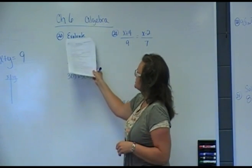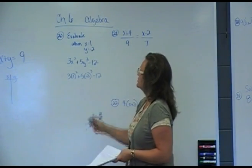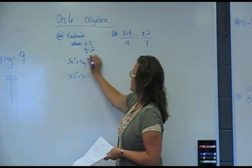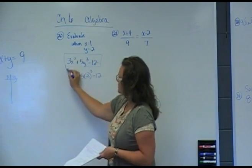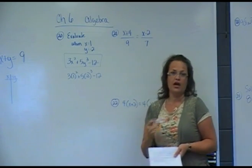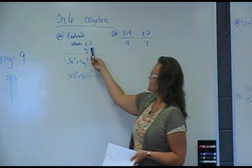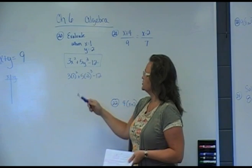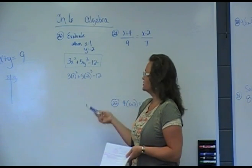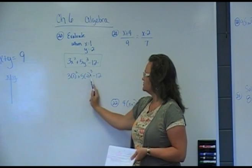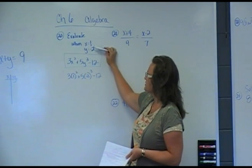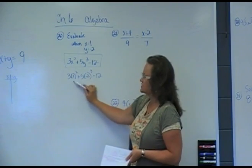Number 20, we'll start with number 20, says to evaluate an expression for x is 1 and y is negative 2. So we have this algebraic expression given on your study guide, and we're asked to fill in x is 1, y is negative 2 carefully, and then use your order of operations. So we'll have 1 squared, and for y we'll have negative 2 cubed. It's always best to fill in your values with parentheses around them.